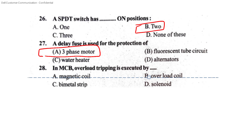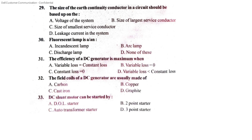MCB — Miniature Circuit Breaker. Overload tripping in an MCB is executed by which element? The options are magnetic coil, overload coil, bimetal strip, or solenoid. The answer is option C — bimetal strip. The size of the earth continuity conductor circuit should be based on the size of the largest service conductor — that is option B.